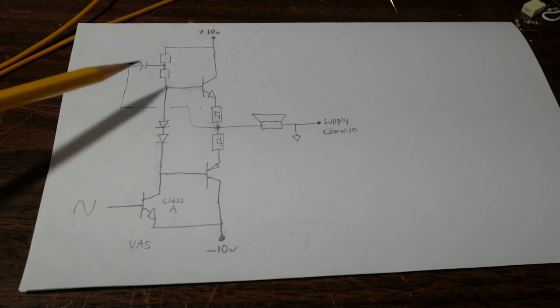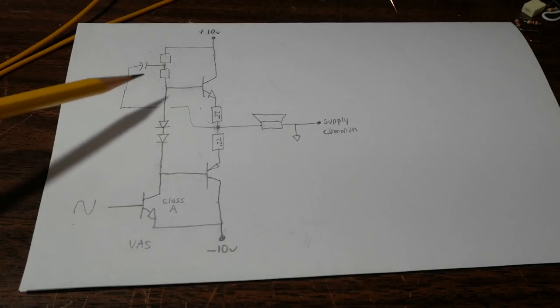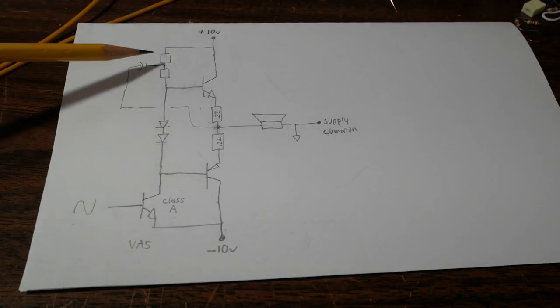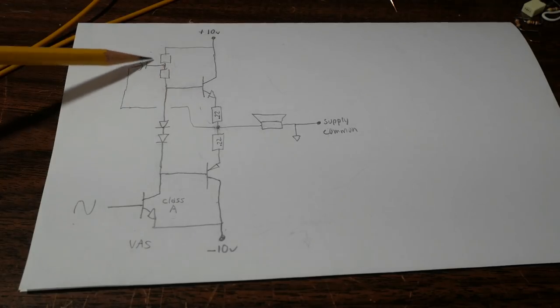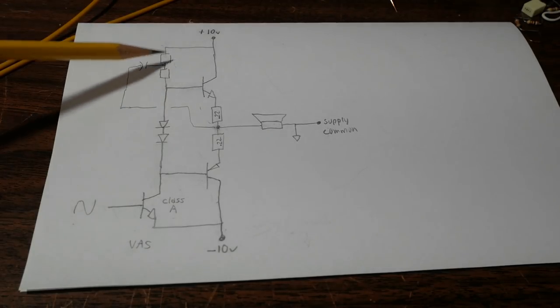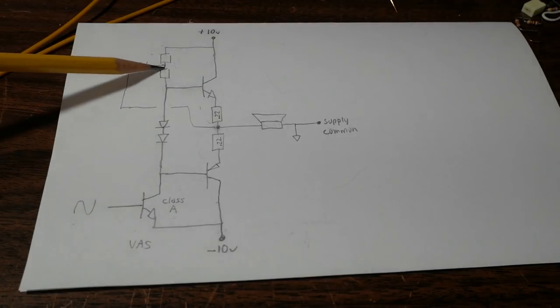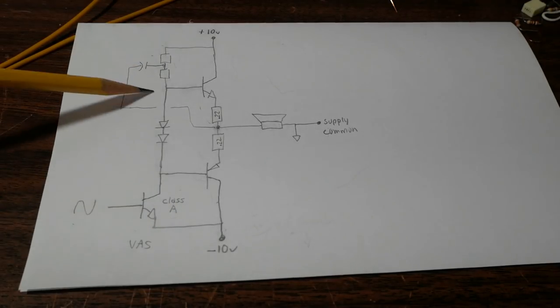And that's pretty much how a bootstrap circuit works. Now in closing, there's a couple more things I want to say. Well for one thing, the bootstrap circuit does not have to be in this positive part of the circuit. It could be down here and the driven transistor could be up here, so they could be flip-flopped.